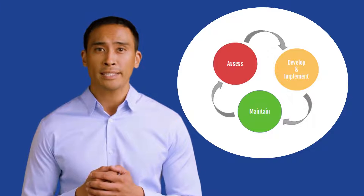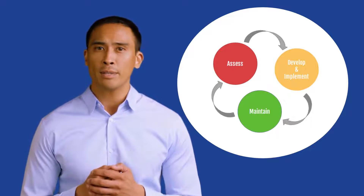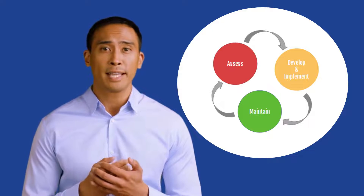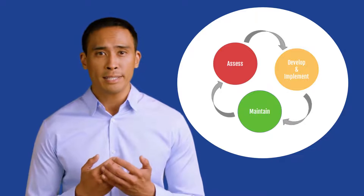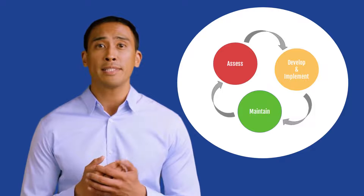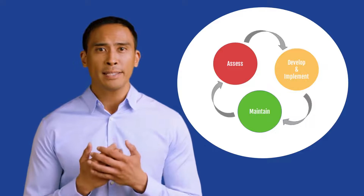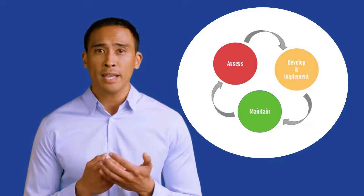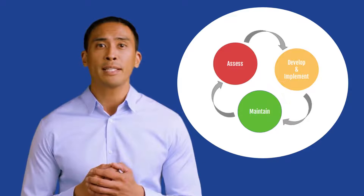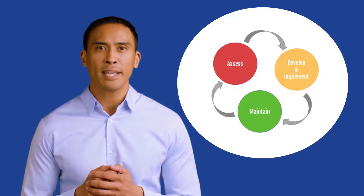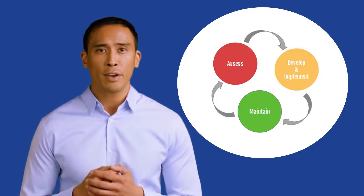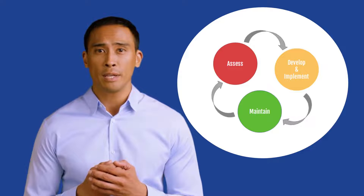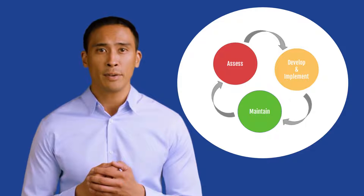In conclusion, the IACS cybersecurity lifecycle is a structured approach to safeguard critical industrial systems. The assess, develop and implement, and maintain phases work together to protect against cyber threats and ensure the resilience of IACS. To implement these principles in your organization, seek guidance from the ISA 62443 standards and consider enrolling in an ISA cybersecurity course. By following the IACS cybersecurity lifecycle, we can enhance the security of our critical infrastructure and protect against evolving cyber threats.